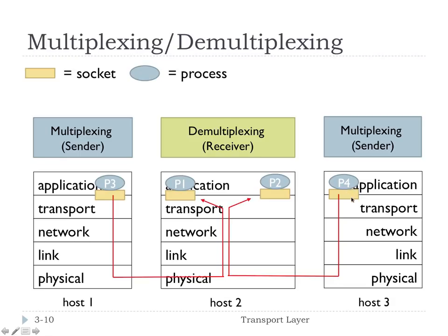The socket — remember we talked about this before — is the door, a connection piece that sits in between the application and transport layer. The sender here is just sending one message, but it is multiplexing that over the transport layer. The receiver, host two, is receiving messages from two different hosts and has to separate those out. Even though both of those segments came to host two, they were intended for different processes on host two.